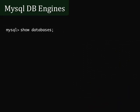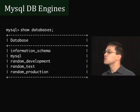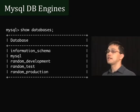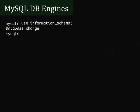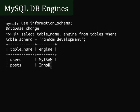We're going to start out the screencast by having a little bit of fun in MySQL. If we type 'show databases' at the MySQL prompt, we might get something back that looks like this. Two of these databases are built into MySQL out of the box: the information schema database and the MySQL database. If we use the information schema database and ask for all the table names and engine names from the database 'random development', we might see that the users table is using the MyISAM engine and the posts table is using the InnoDB engine.